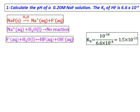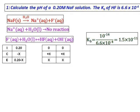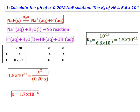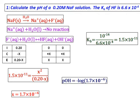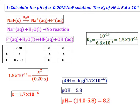The Ka of HF is given, so we calculate the Kb of F⁻ using Ka × Kb = 10⁻¹⁴. Using that value of Kb, we set up the ICE table and solve for X, the concentration of hydroxide ions. From the hydroxide ion concentration we calculate the pOH, and from that we get the pH as 8.2 — consistent with sodium fluoride, a salt of a strong base and a weak acid, giving a basic solution.